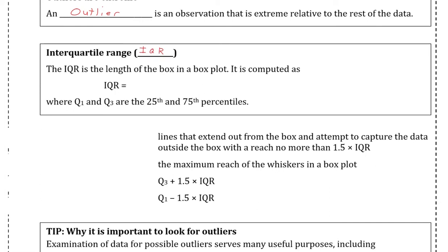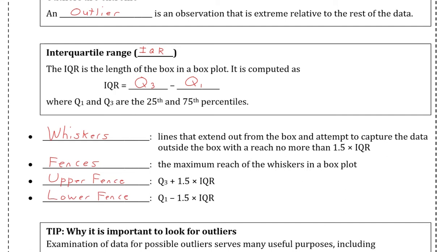The interquartile range, or IQR for short, is the length of the box in the box plot. It is computed as the difference between Q3 and Q1, where both of those are the two percentiles mentioned earlier. Around the box are what are called whiskers, lines that extend out from the box and attempt to capture the data outside the box with a reach no more than 1.5 times IQR. The restriction of 1.5 times IQR is known as the fences for that plot, the maximum reach of the whiskers in a box plot. The upper fence is calculated as Q3 plus 1.5 times IQR, and the lower fence is calculated as Q1 minus 1.5 times IQR.